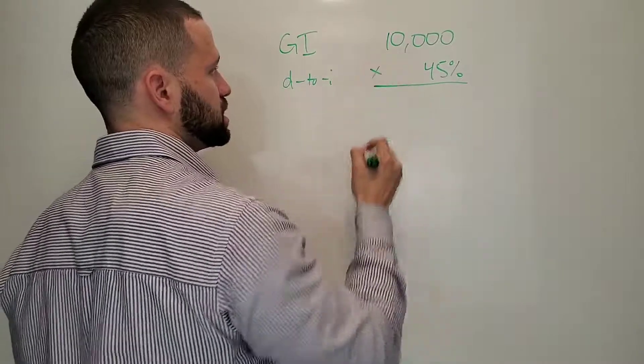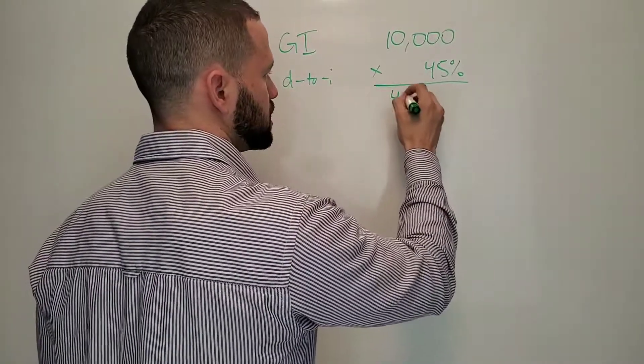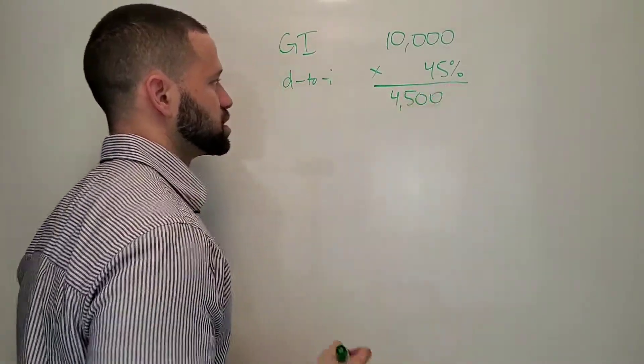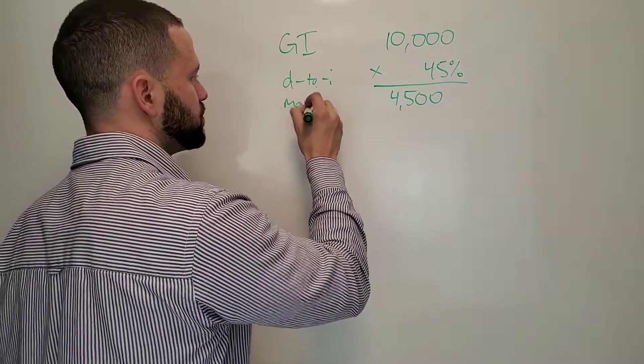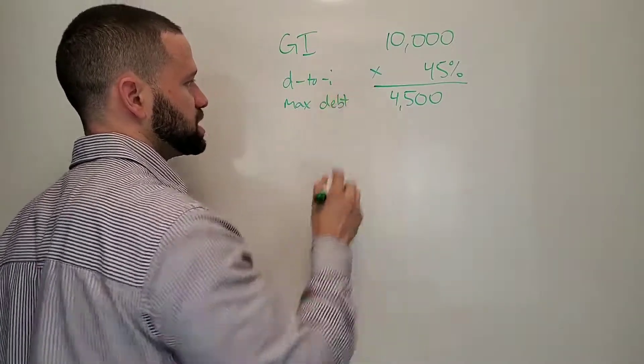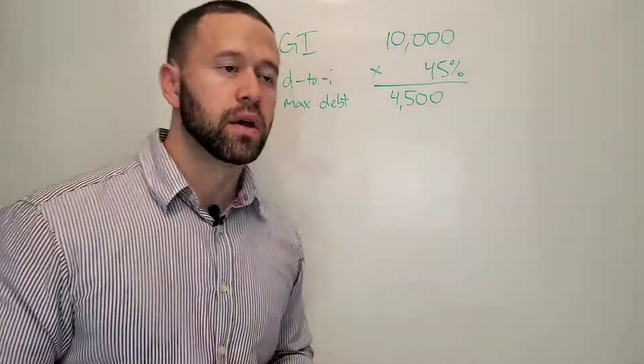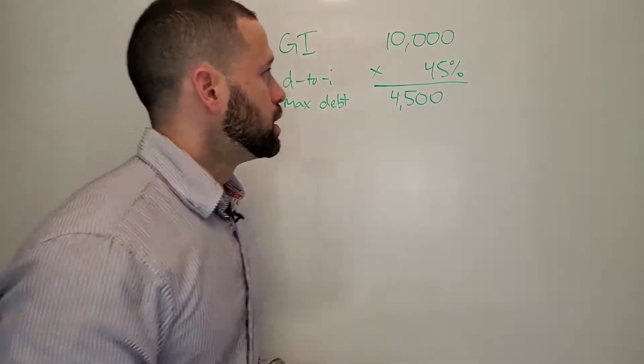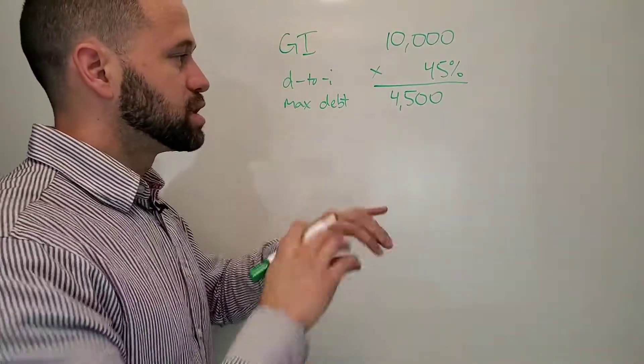What that calculation does is it tells you, as far as your lender is concerned, this is your maximum debt. This is as much debt obligations as you can have per month. That's your max total debt. This includes all your debt.